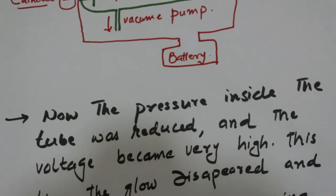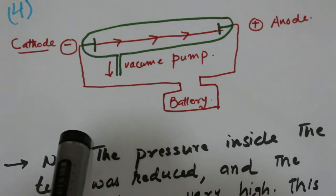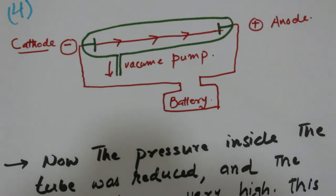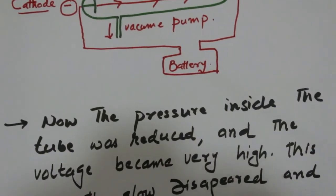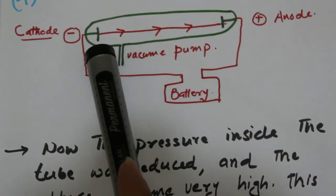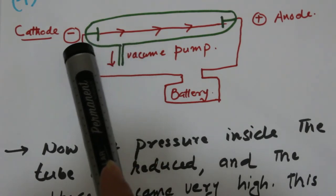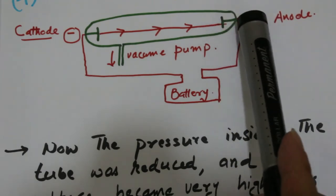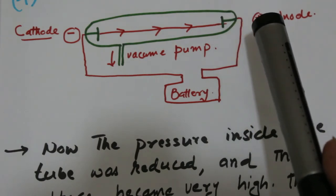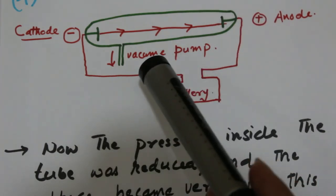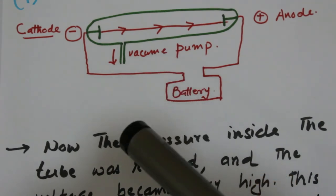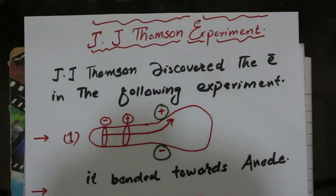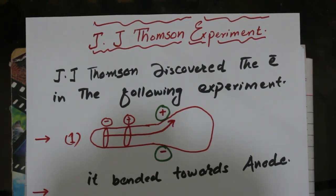These cathode rays are negatively charged. The ray of particles produced moves from the cathode towards the anode, strikes the wall of the tube, and produces fluorescence. This ray of particles is called cathode rays, and they were discovered by William Crookes.